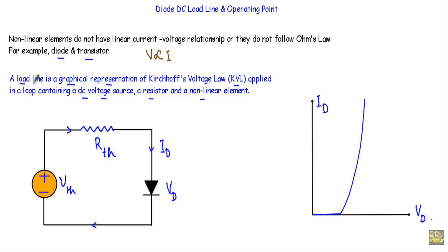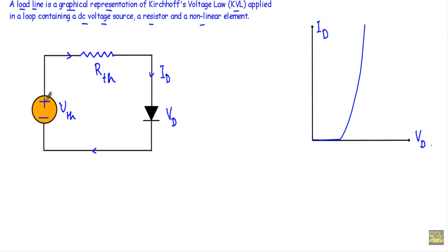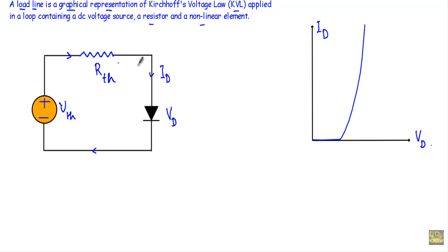For example, let's say I have a circuit with a DC voltage source VTH in series with a resistor RTH and a nonlinear element — for example, a diode. I use VTH and RTH because in some circuits the diode will be inside a complex network, and we can reduce any complex network into a single voltage source in series with a resistor, which we call the Thevenin equivalent circuit. In this circuit the diode current ID will be the same everywhere since it is a series circuit.